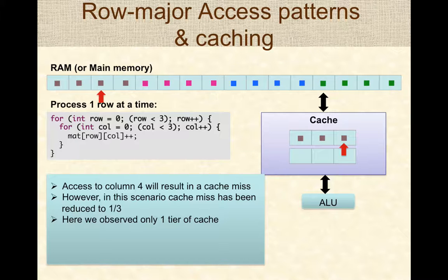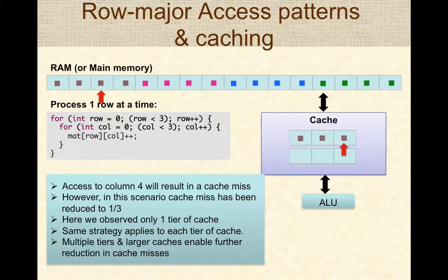Here we observed only one tier of cache, but when there are multiple tiers, the same strategy applies to each tier. Multiple tiers and larger caches enable further reduction in cache misses, thereby improving the overall performance of programs — assuming they are designed to be cache-optimal.